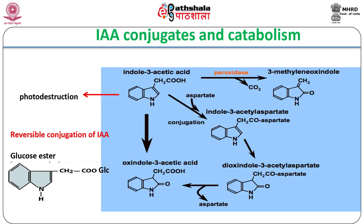Inactive IAA is also formed by conjugation with glucose or amino acids, which are the forms in which IAA is transported. Free IAA is released at the site of action. Conjugation with aspartic acid, however, is irreversible and leads to IAA catabolism.